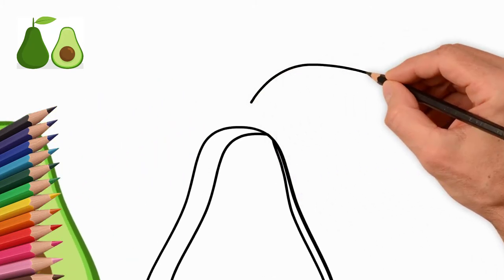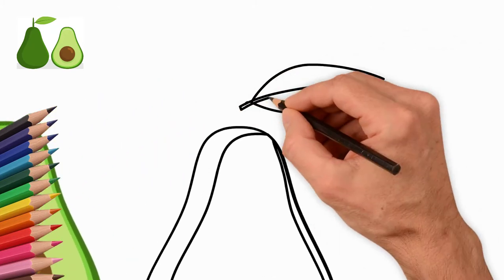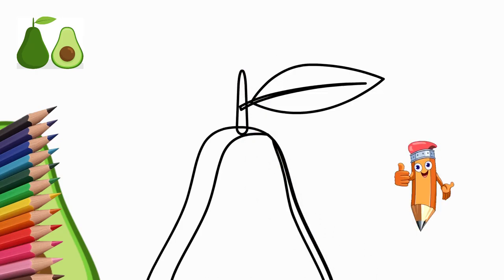Now let's draw a whole avocado. Draw the outline of the avocado again. At the top draw a ponytail. Draw a leaf on the tail.